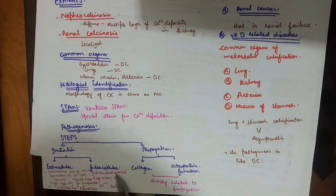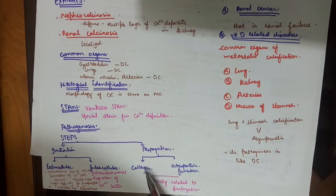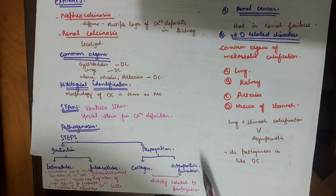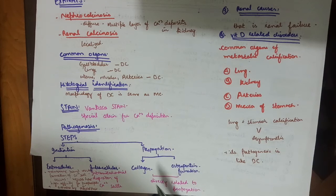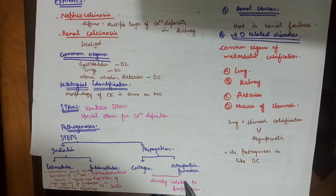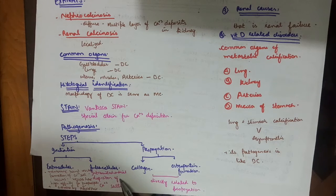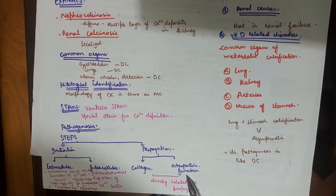In the intracellular pathway, there is intramitochondrial deposition of calcium salts. For propagation, two things occur: collagen formation and osteopontin formation. In the pathogenesis of dystrophic calcification, direct deposition of calcium occurs, and osteopontin is formed. Both collagen and osteopontin contribute to propagation and the overall pathogenesis of dystrophic calcification.